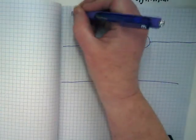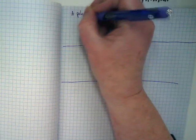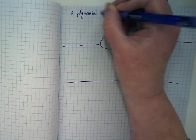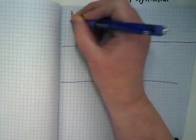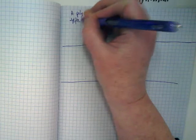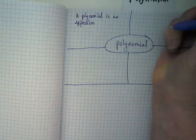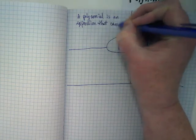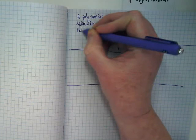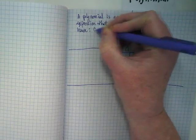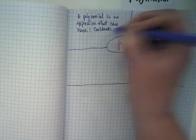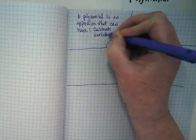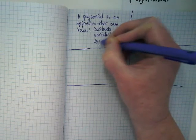So we're going to start with the definition. A polynomial is an expression, a mathematical expression, that can have constants, variables, and exponents.